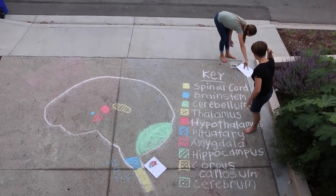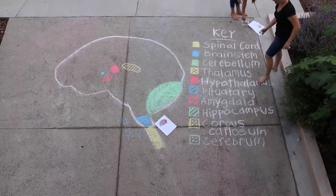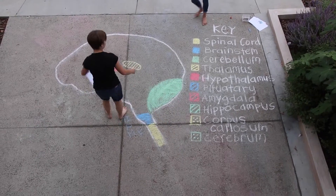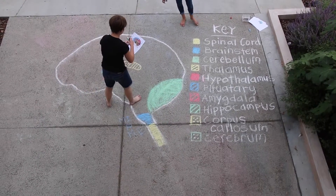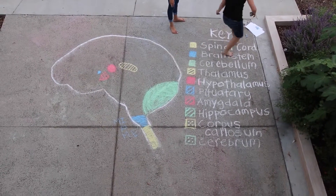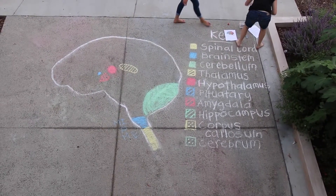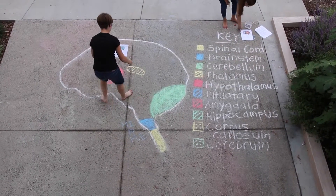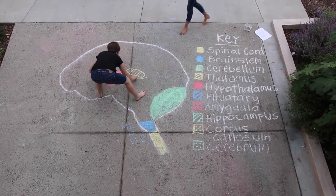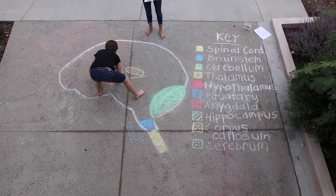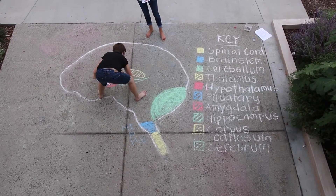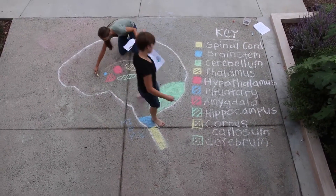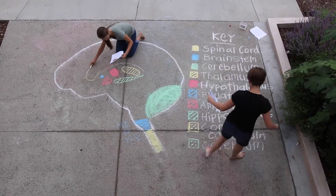Now we have the hippocampus. It is a neural center located in the limbic system that helps process explicit memories for storage. Sub-regions of the hippocampus serve different functions — one part is active as people learn to associate names with faces, and another part is active as memory engages. Memories are not permanently stored in the hippocampus; they migrate for storage elsewhere. Sleep supports memory consolidation.